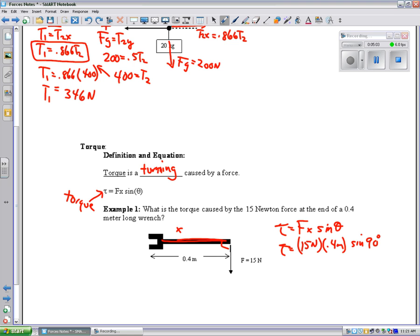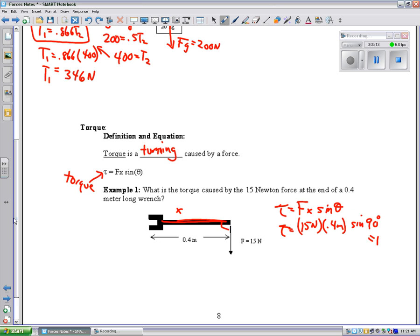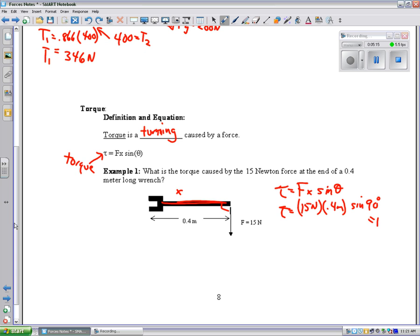Now, the sine of 90 is 1, so I'm just multiplying by 1, so I can actually ignore that. Whenever I have a right angle in there, I often just leave the sine theta off, because I know it's not going to change it. So, when I multiply these together, I get 15 newtons times 0.4 meters is 6, and torque doesn't have its own unit, so you have to just use newton meters to get the unit for torque.